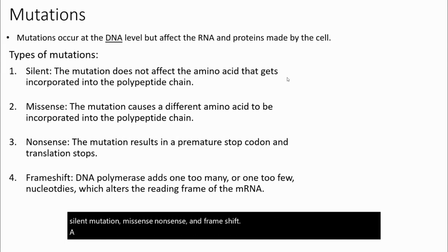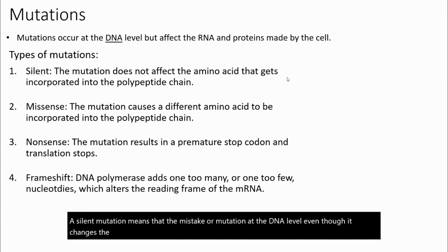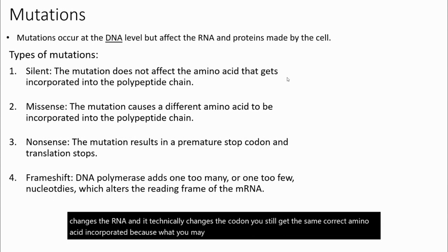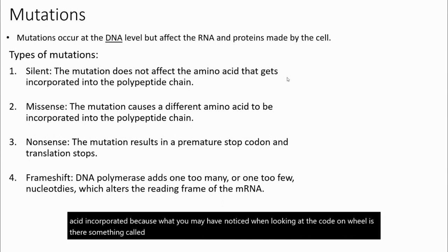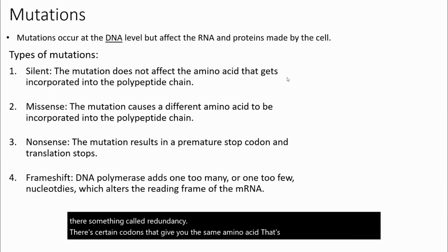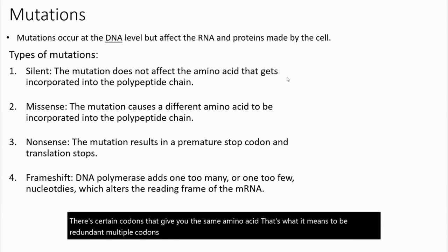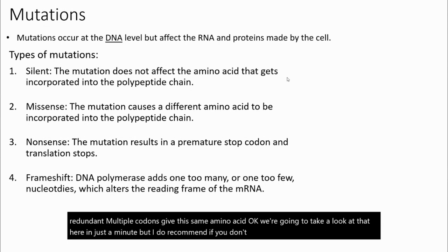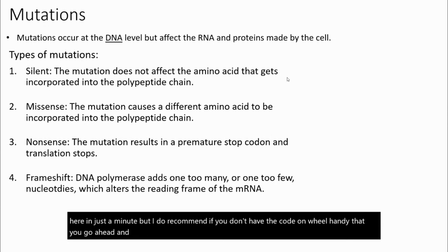A silent mutation means that the mistake or mutation at the DNA level, even though it changes the DNA and technically changes the codon, you still get the same correct amino acid incorporated. This is because of something called redundancy — there are certain codons that give you the same amino acid. Multiple codons can code for the same amino acid. I recommend having your codon wheel or codon chart handy for this.